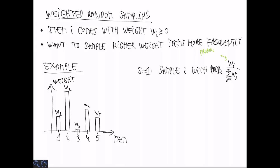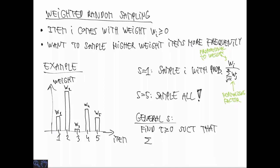So suppose we just want to sample a single item. Then there's a very natural thing one can do. So we can sample item i with probability wi divided by the sum of all weights. So this gives sampling probability proportional to the weight, which is nice. And the normalizing factor down here ensures that this is actually a probability distribution that we get one sample in expectation. But if we want to sample five elements, we want to sample all of them.